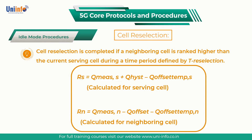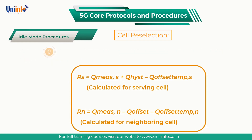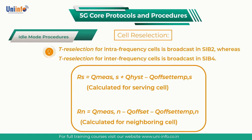If range to best cell is not broadcast by SIB2, then cell reselection is completed if a neighbouring cell is ranked higher than the current serving cell during a time period defined by T-reselection, and if more than one second has passed since the UE camped on the current serving cell. T-reselection for intra-frequency cells is broadcast in SIB2, whereas T-reselection for inter-frequency cells is broadcast in SIB4.